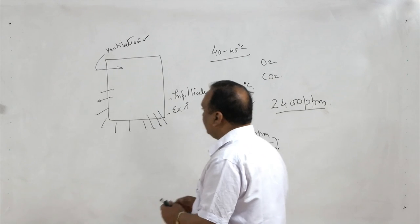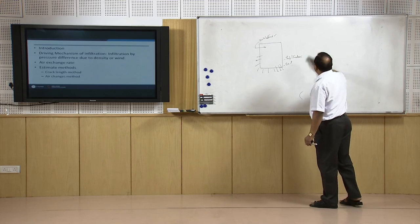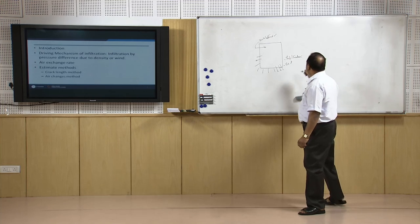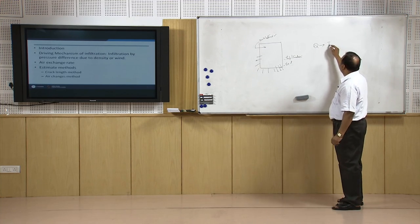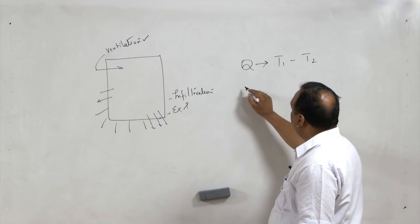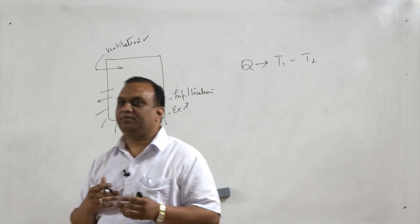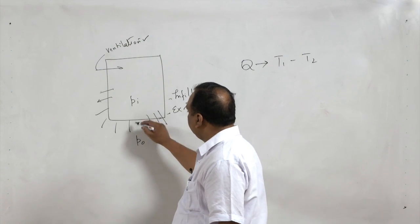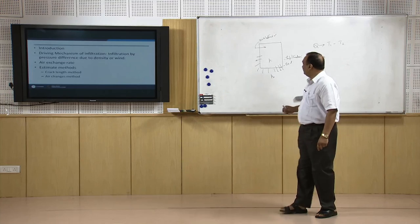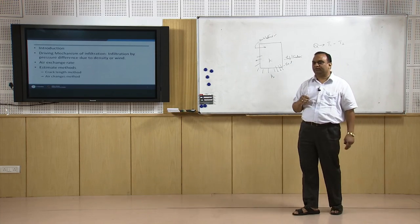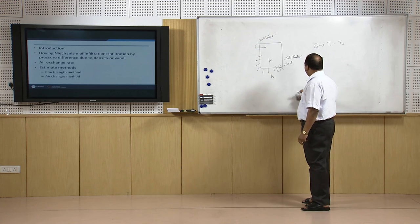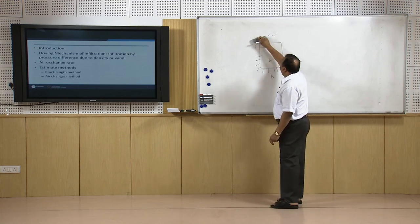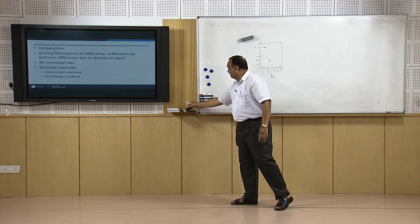Now let us talk about infiltration. Infiltration is the undesired flow of air in the building. Just as heat cannot transfer without a temperature difference, bulk fluid cannot be transferred without a pressure difference. So there has to be a pressure difference between inside and outside pressure, which acts as the driving force for air movement into or out of the building. The question is: how is this pressure difference generated, and how can we prevent infiltration?